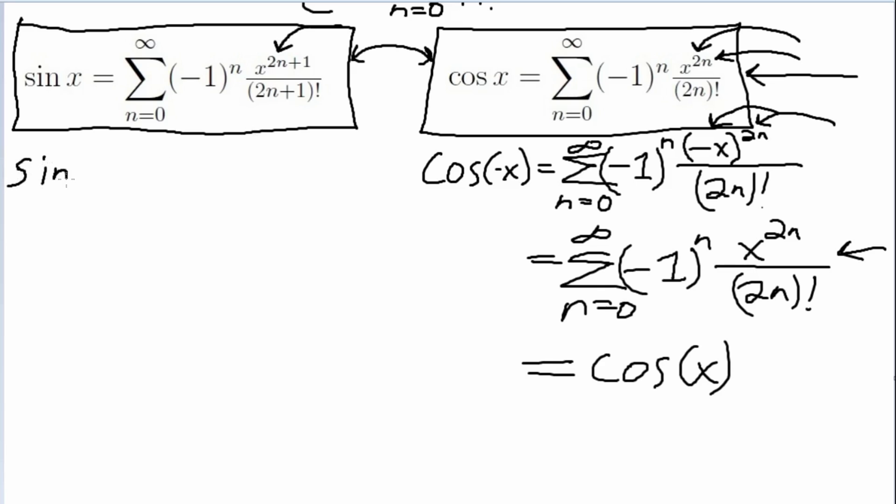So we have sine of negative x is equal to, which is going to substitute in a negative x where we had a positive before, negative x to the 2n plus 1 power and divide by 2n plus 1 factorial.